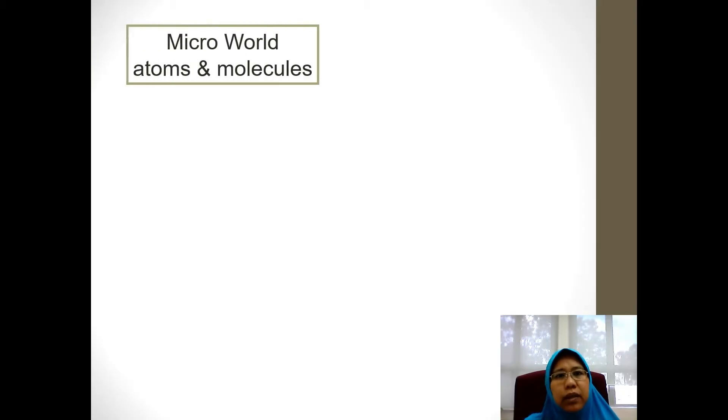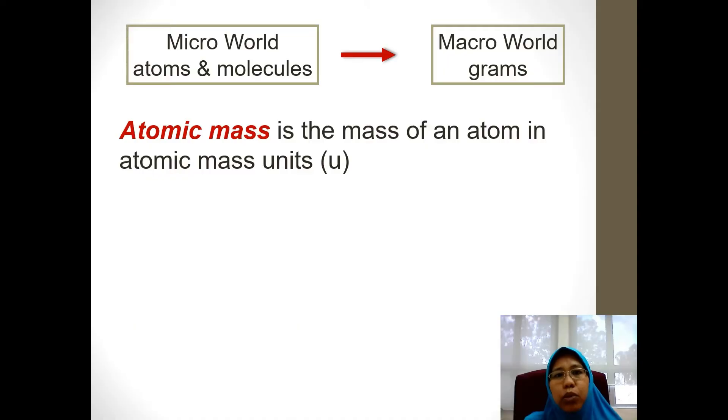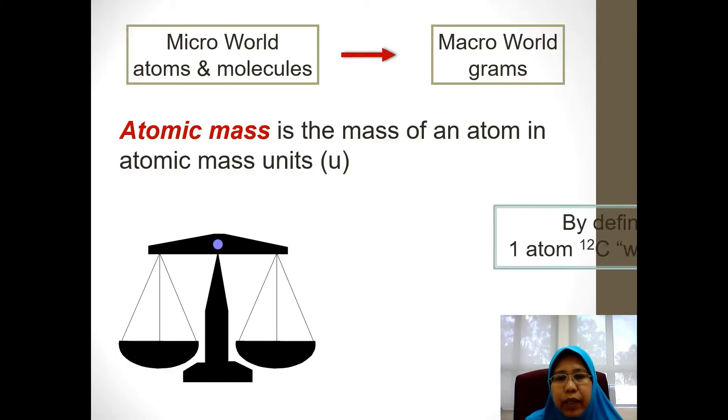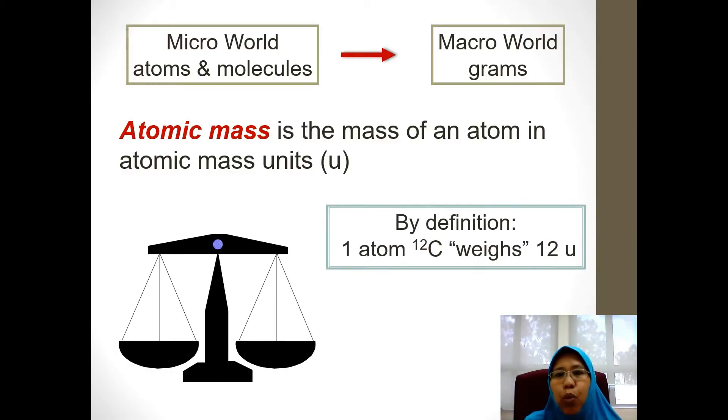In the micro world we are talking about atoms and molecules, but how are we going to relate it to the macro world whereby we have to weigh how many grams you need to do an experiment in the laboratory? We use the relative atomic mass, the one that we've learned in lesson two. It's the mass of an atom in atomic mass units.